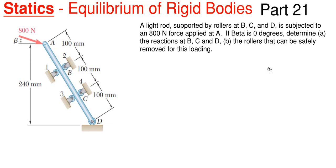In today's video we're going to be covering statics — equilibrium of rigid bodies — and this will be our 21st part, and we will be finding some reactions. What we have going on is this picture on the left: a light rod supported by rollers at B, C, and D is subjected to an 800 newton force applied at A. If beta is equal to zero degrees, so essentially the 800N is horizontal, determine the reactions at B, C, and D, and we also have to determine if we can remove any of these rollers and still have a safe design.